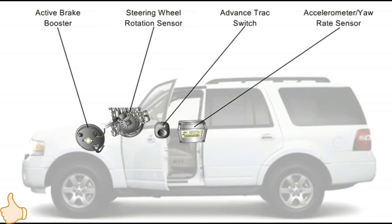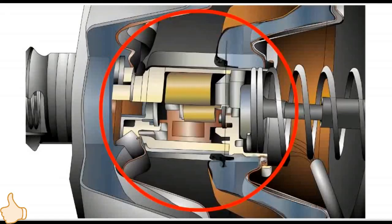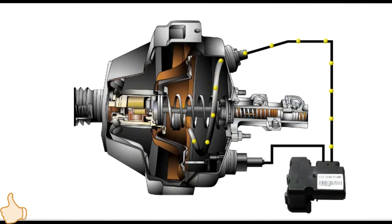If a yaw rate sensor, lateral accelerometer, or steering wheel rotation sensor fails, the control module may not recognize if the vehicle goes into a skid. This may illuminate the Advanced Track indicator and set a DTC.